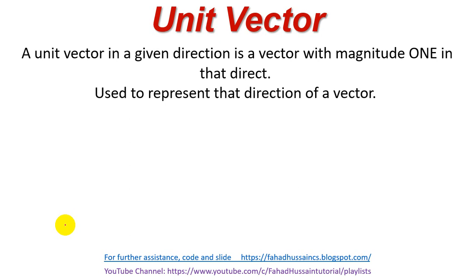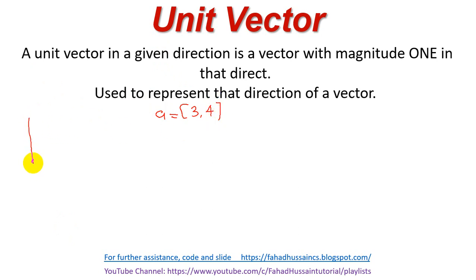Let's see an example to understand this better. We have a vector A with values [3, 4], which means this is a 2D vector. If I draw it roughly on the x-axis and y-axis, x is 3 and y is 4, making a point, and I draw a line with an arrow — this is our vector.